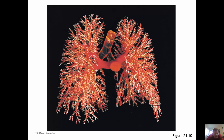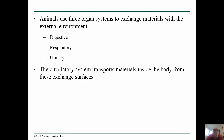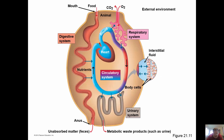We need to exchange material with our outer environment. Here is an example of the lungs — this is the bronchial tube where air comes in and where blood comes into the lungs. The three organ systems that exchange materials with our external environment are the digestive system, the respiratory system, and the urinary system. The circulatory system transports materials inside the body and exchanges on that surface — this is basically a model animal.